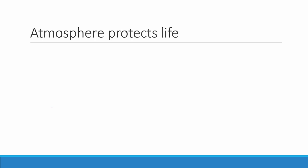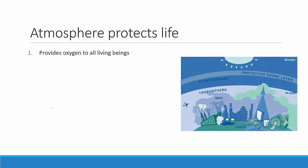Now let's see how the atmosphere is supporting life on earth. The first and most important point is that it provides oxygen for all living beings. Living beings breathe oxygen, including us, and this oxygen is provided by the atmosphere. Secondly, it provides carbon dioxide to plants. Plants utilize carbon dioxide to prepare food, and animals will consume this food directly or indirectly.